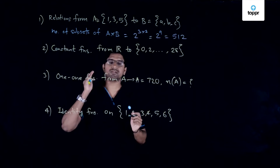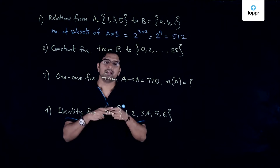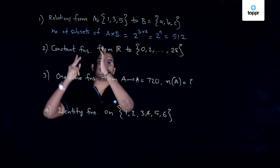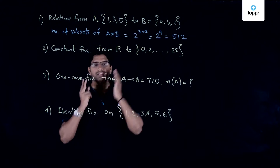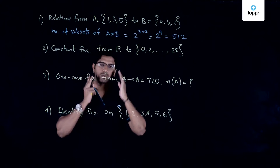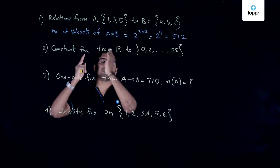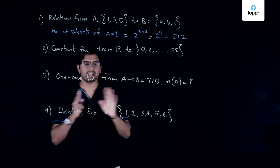The important concept used here is that the number of relations from one set to another is equal to the total number of subsets of the cross product of the two sets.